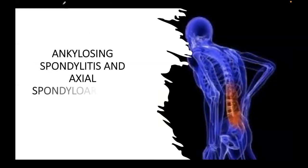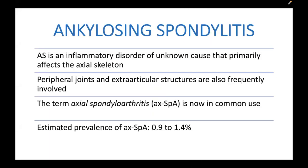First, let's talk about ankylosing spondylitis (AS) and the axial spondyloarthritis. AS is an inflammatory disorder of unknown cause — hence the term 'itis' — and it affects the axial skeleton. A mnemonic: the letter 'A' sounds like 'ah,' the reaction of someone who doesn't know the answer is 'unknown,' and the involvement is 'axial.' Aside from the axial skeleton, there can be peripheral joint involvement and extra-articular structures, but AS is predominantly axial.